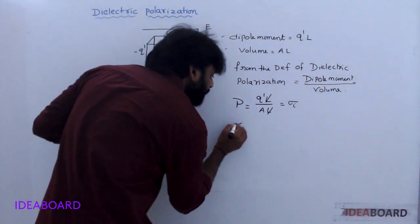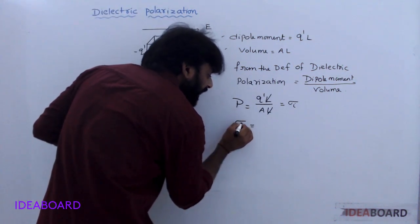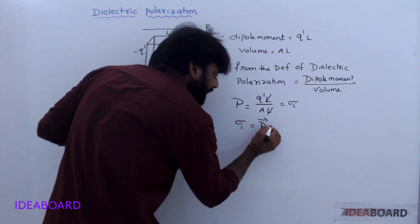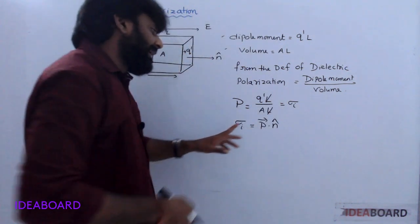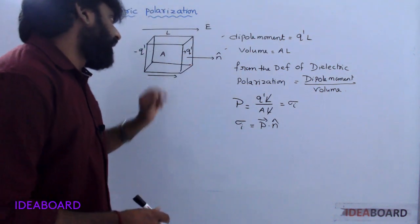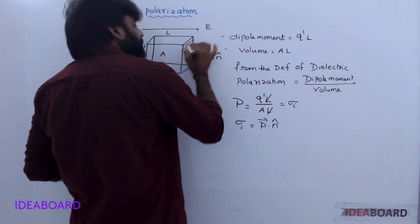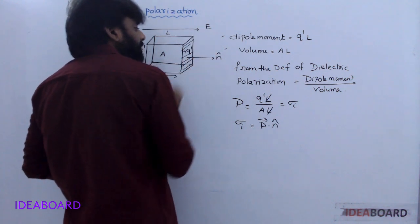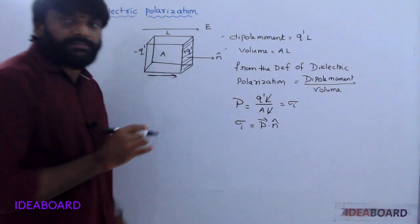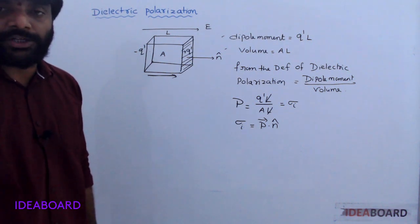In vector form, sigma-i is equal to P-bar dot n-cap, where n-cap is the unit vector normal to the surface, along the dipole moment direction.